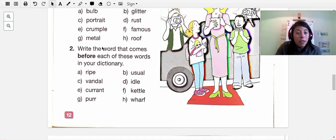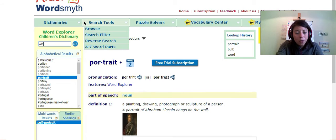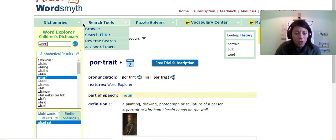Then in exercise number two, you have to write the word that comes before each of these words in your dictionary. So you take all these: vandal, current, purr, usual, idle, petal, wharf. I'm going to do wharf as an example. W-H-A-R-F. Wharf. Fisherman's wharf.